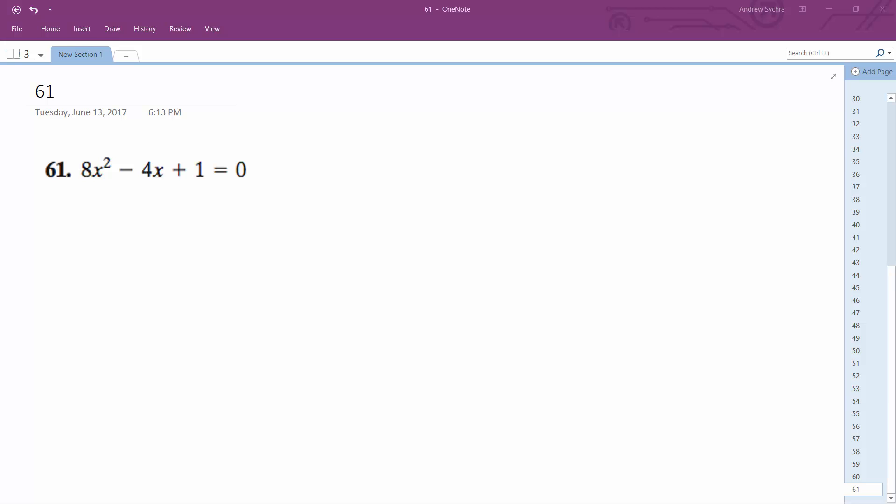We're going to solve this problem using the quadratic formula, which is -b plus or minus square root of b squared minus 4ac all over 2a.